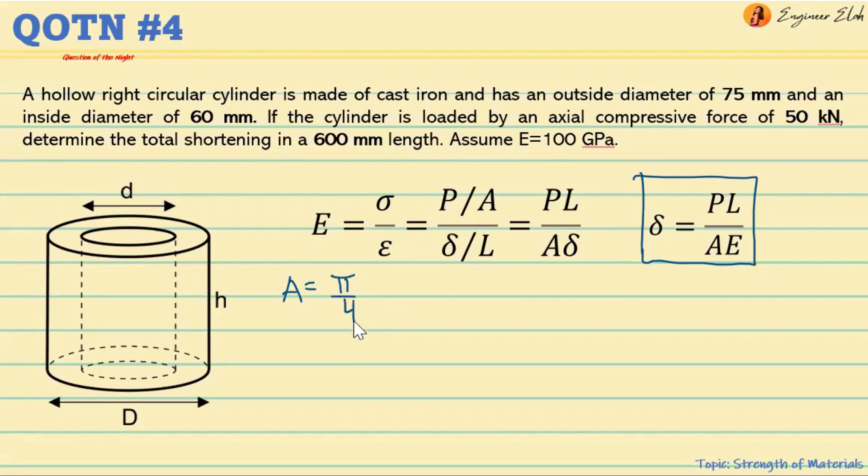The formula is A equals pi over 4 times the outer diameter squared minus the inner diameter squared. So pi over 4, the outer diameter is 75 millimeters, but we can convert that to meters, making it 0.075 meters squared.